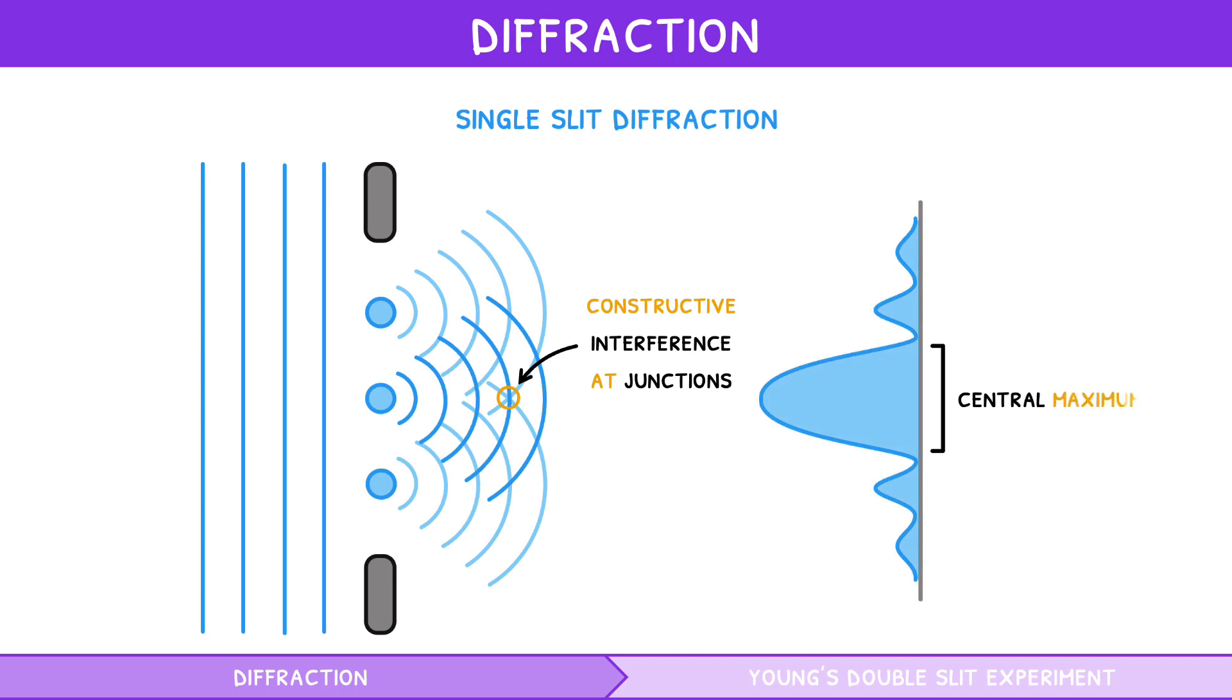This forms a central maximum with high intensity and amplitude. To the sides of this, waves destructively interfere between wave junctions. This forms the first minima.